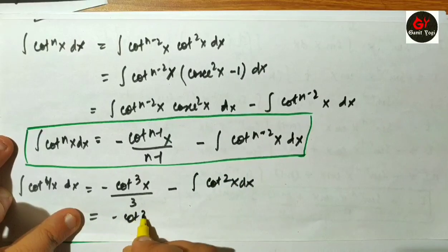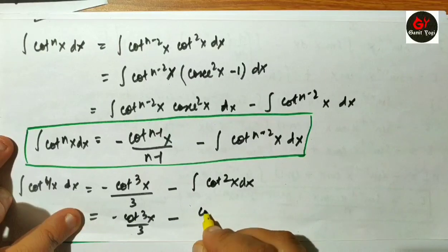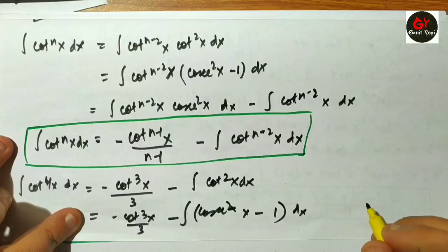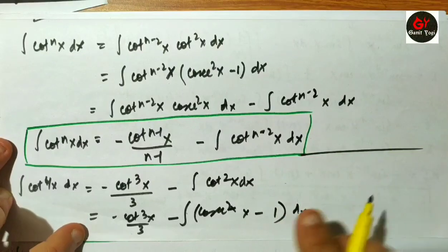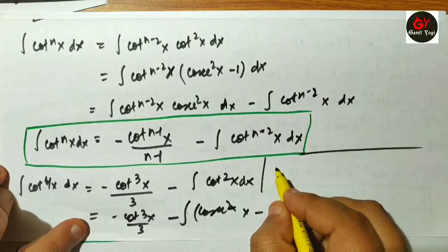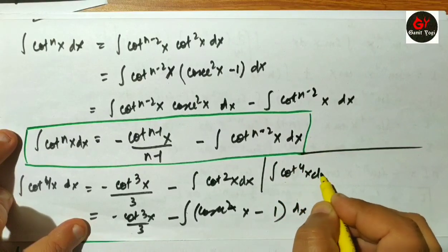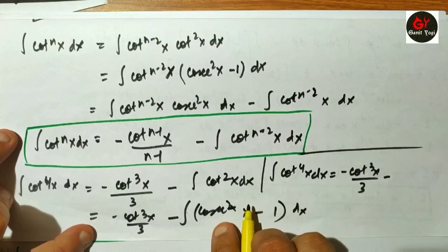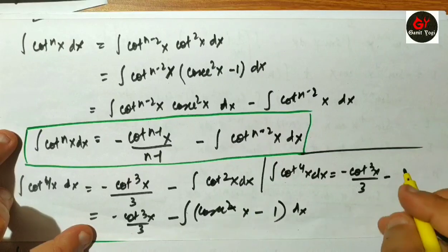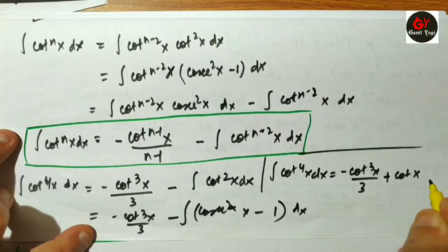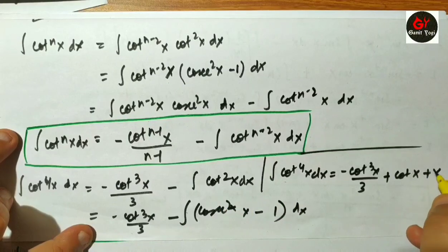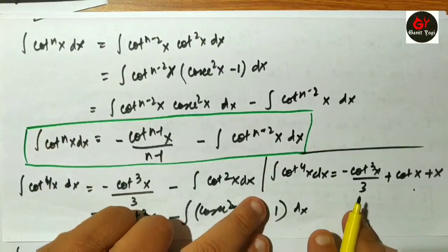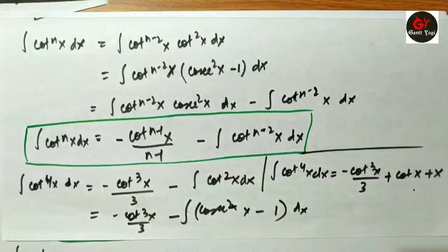This becomes minus cot cubed x divided by 3, minus integral of cot squared x dx. Now cot squared x equals cosec squared x minus 1, so the integral of cot to the power 4(x) dx equals minus cot cubed x divided by 3. The integral of cosec squared x is minus cot x, so this becomes plus cot x, and the minus of minus 1 gives plus x, plus a constant of integration. This is the antiderivative and can be calculated very easily.